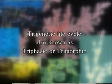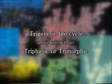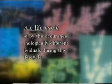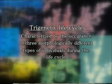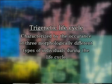The third and last category of life cycles found in algae is the trigenetic or triphasic or trimorphic type. This type of life cycle is characterized by the occurrence of three morphologically different types of individuals or phases during the life cycle, hence the name trimorphic or triphasic or trigenetic type of life cycle.